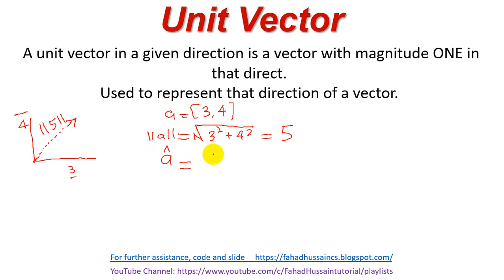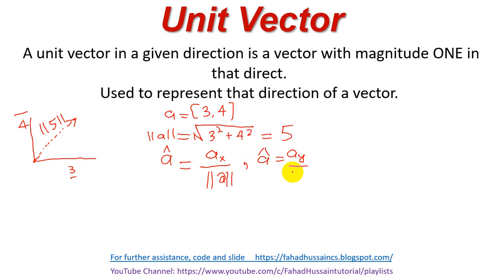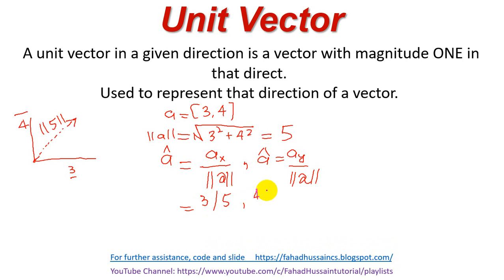The unit vector formula is: the x-component of vector A divided by the magnitude of A, and similarly the y-component of A divided by the magnitude of A. So for our example, the x value 3 divided by 5 gives 3/5, and the y value 4 divided by 5 gives 4/5.